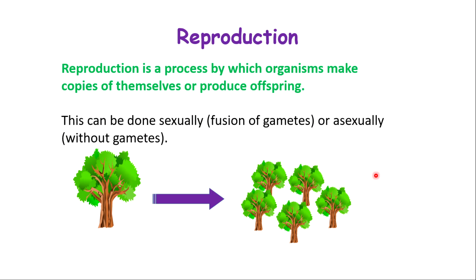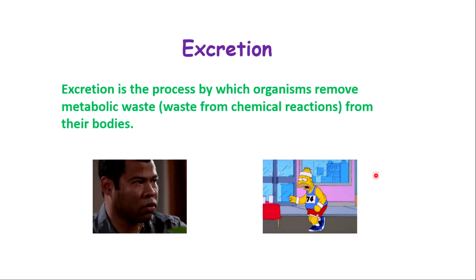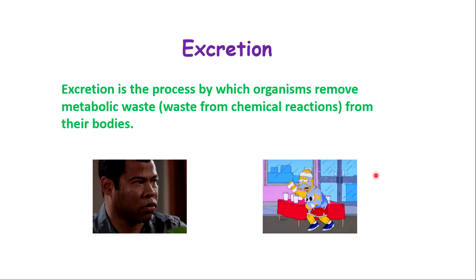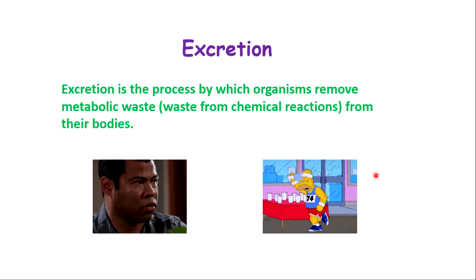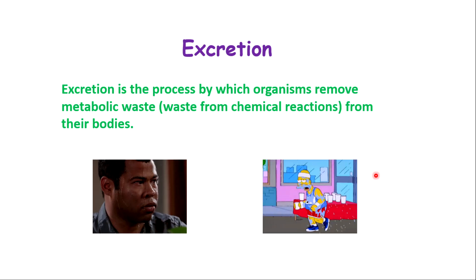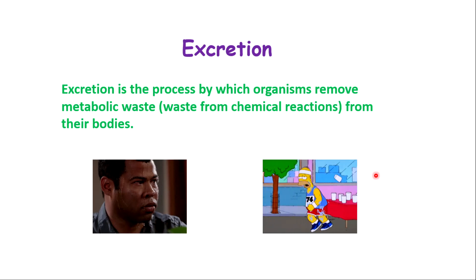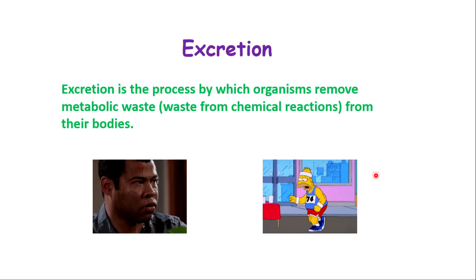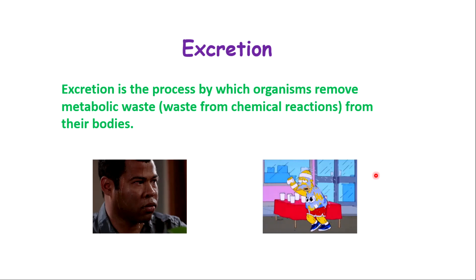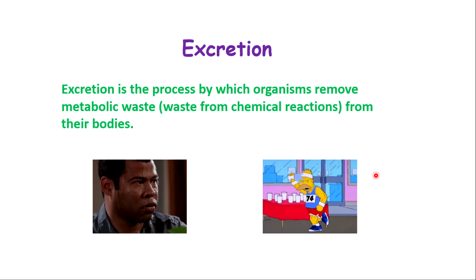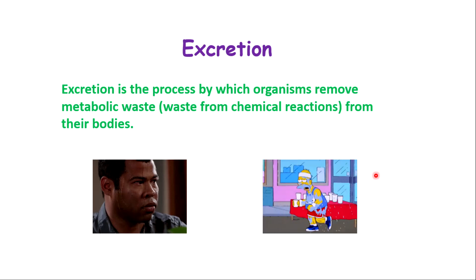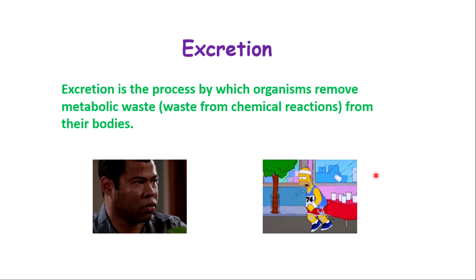Excretion is the process by which organisms remove metabolic waste — chemical waste or waste from chemical reactions in the body. One such chemical reaction is respiration: when we respire, we produce carbon dioxide, which is a waste, and we remove it by exhalation. Another chemical waste we produce is urea, which we remove from our body in the form of urine and sweat. Excretion is always the removal of chemical waste.